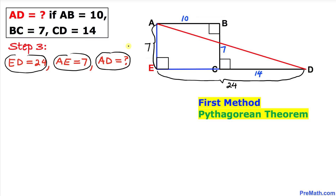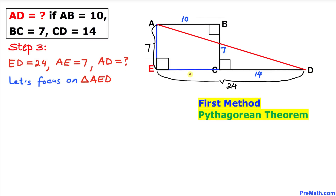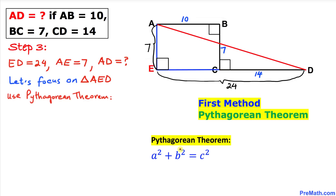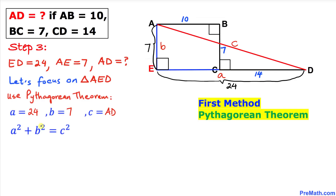So ED is 24, and AE is 7. Now we will calculate the distance AD by focusing on triangle AED. We know this triangle is a right triangle, so we are going to use the Pythagorean theorem: a² + b² = c². In triangle AED, the longest side AD is c, the horizontal leg ED is a, and the vertical side AE is b.